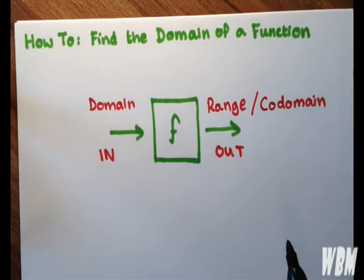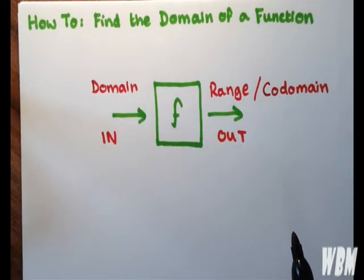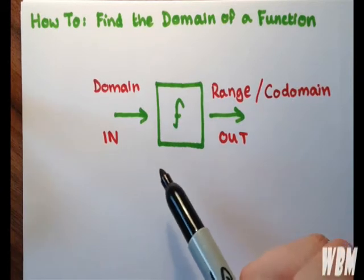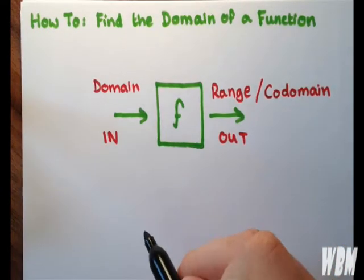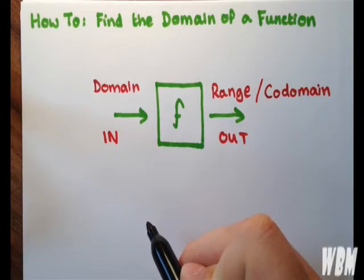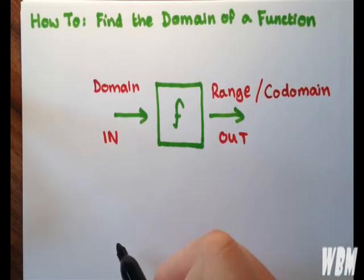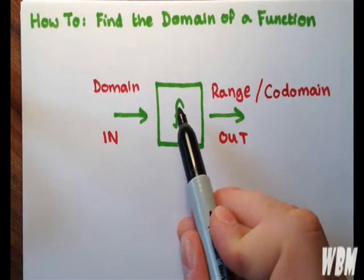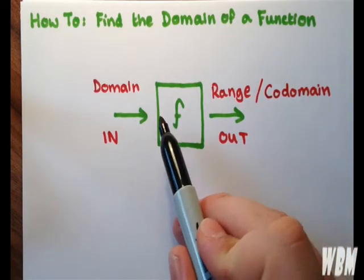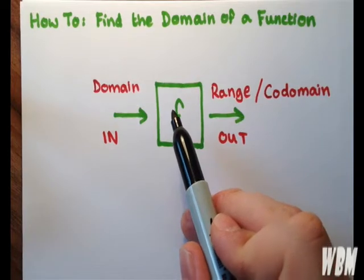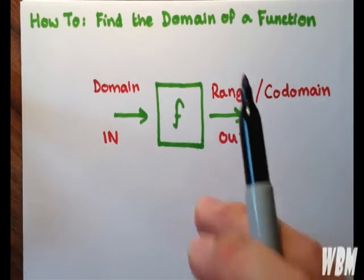When calculating the domain of a function, you want to make sure that there are no errors occurring in the mathematics. You want to make sure that absolutely everything that goes into the function will provide an answer. You don't want there to be any anomalies. There are two things that we should look out for.